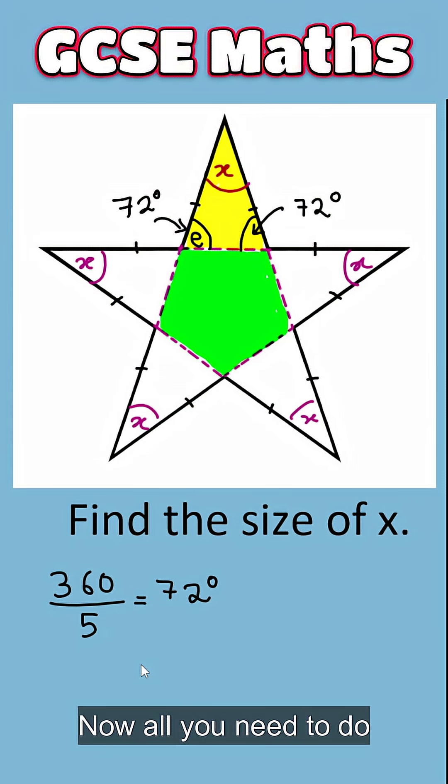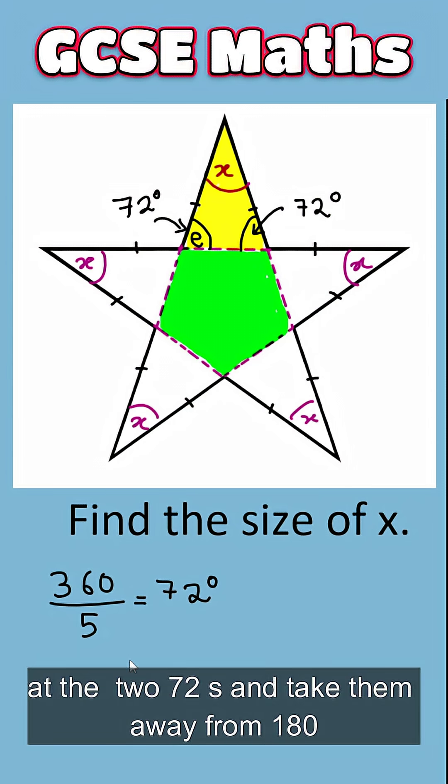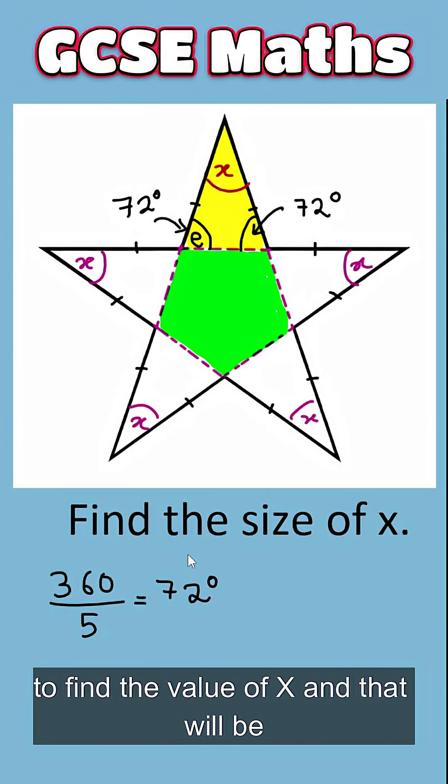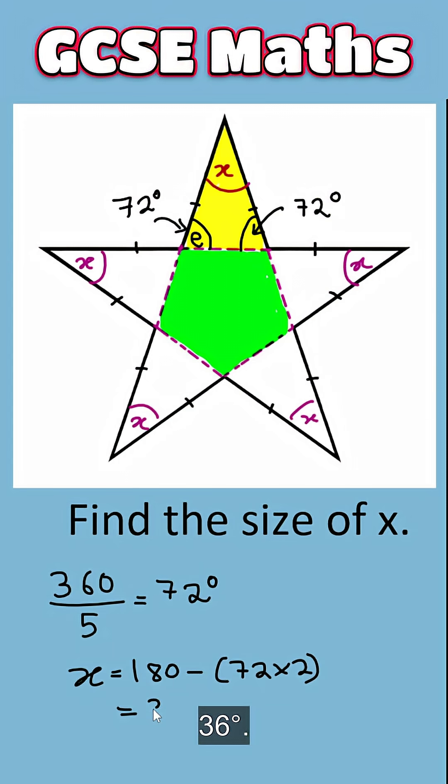Now all you need to do is add the two 72s and take them away from 180 to find the value of X. And that will be 36 degrees.